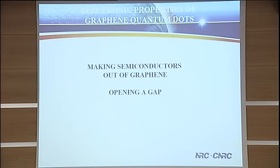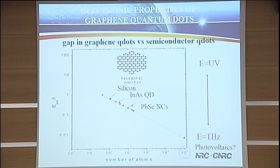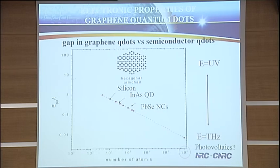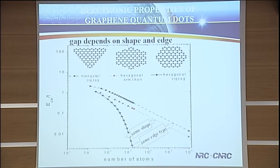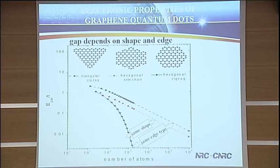Let's make semiconductors out of graphene and see if we can open a gap. We take a hexagonal quantum dot with armchair edges and calculate the gap from a 100-atom quantum dot to a million-atom quantum dot. With t about 2.5 electron volts, we span the energy range from UV to terahertz. Comparing to silicon, indium arsenide quantum dots, and lead selenide nanocrystals — just by changing the size — you can get whatever energy range you want in principle. The gap depends strongly on both size and edge: a hexagon with zigzag edge versus armchair edge shows very different size dependence, and deforming the hexagon with zigzag edge into a triangle gives yet another very different behavior.